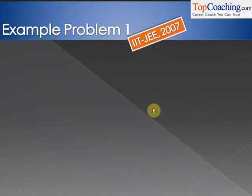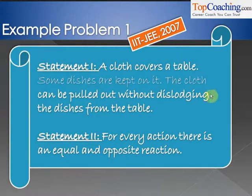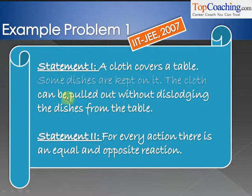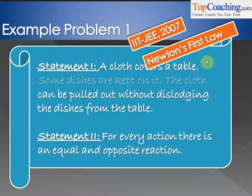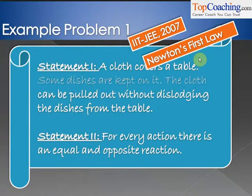D if statement one is false and statement two is true. Statement one is: a cloth covers a table, some dishes are kept on it, and the cloth can be pulled out without dislodging the dishes from the table. Statement two is: for every action, there is an equal and opposite reaction. In this question, you can see that statement one reflects Newton's First Law. After all, if you take a cloth and have some dishes on it, and you pull the cloth away and the dishes don't fall, the point is that the dishes have a certain inertia. The dishes continue to be in their state of rest unless an external force acts on them. So the dishes don't get dislodged because they have the tendency to stay where they are unless an external force acts. If you pull the cloth away gently, an external force does not act on the dishes and they stay where they are. This is Newton's First Law.